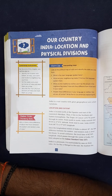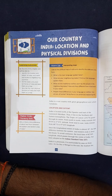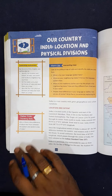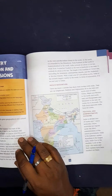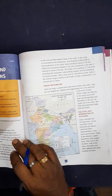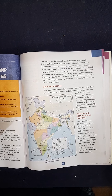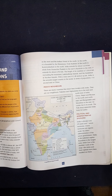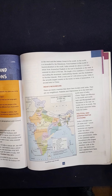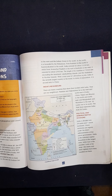India is a peninsula. It is surrounded by sea on three sides: the Bay of Bengal in the east, the Arabian Sea in the west, and the Indian Ocean in the south. In the north, it is bounded by the Himalayas.